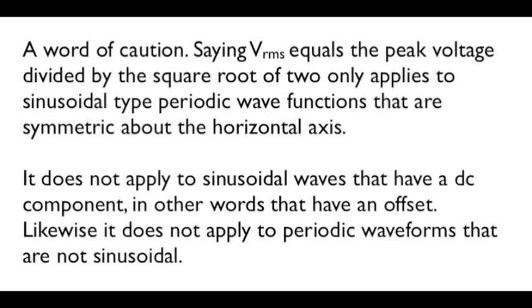Just a word of caution, saying that V_rms equals the peak voltage divided by the square root of 2 only applies to sinusoidal-type periodic waves that are symmetric about the horizontal axis. It would not apply to sinusoidal waves that also have a DC component that would have an offset. Likewise, it does not apply to periodic waveforms that are not sinusoidal. In those situations, one must go through the three-step process of first squaring the voltage, secondly finding the average by integrating over one period, and finally taking the square root.